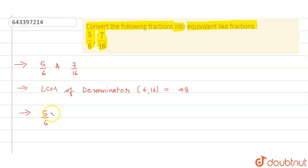5 upon 6 multiplied by 8 that is equal to 40 upon 48. And the second fraction is 7 by 16 multiplied by 3 that will come to 21 upon 48.